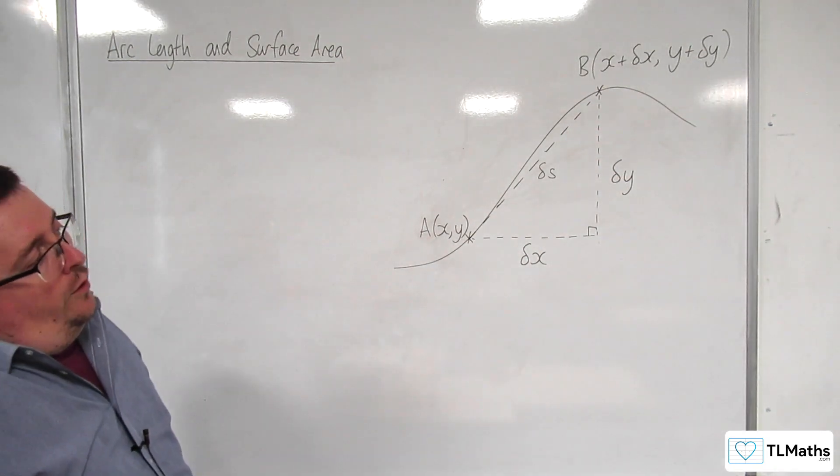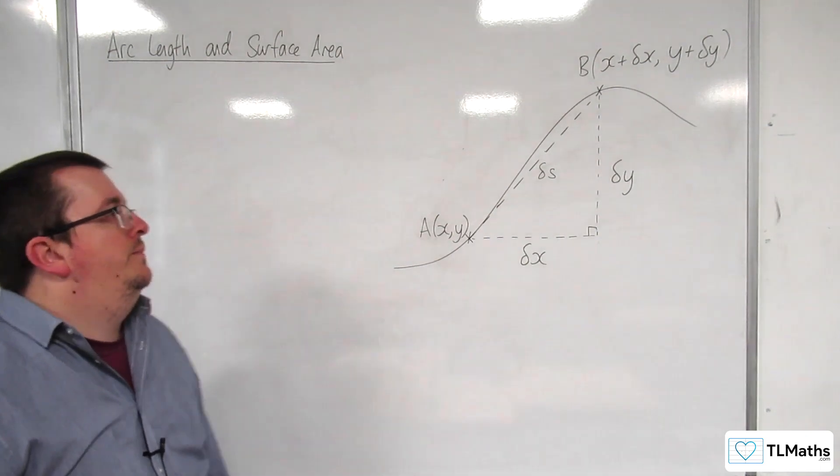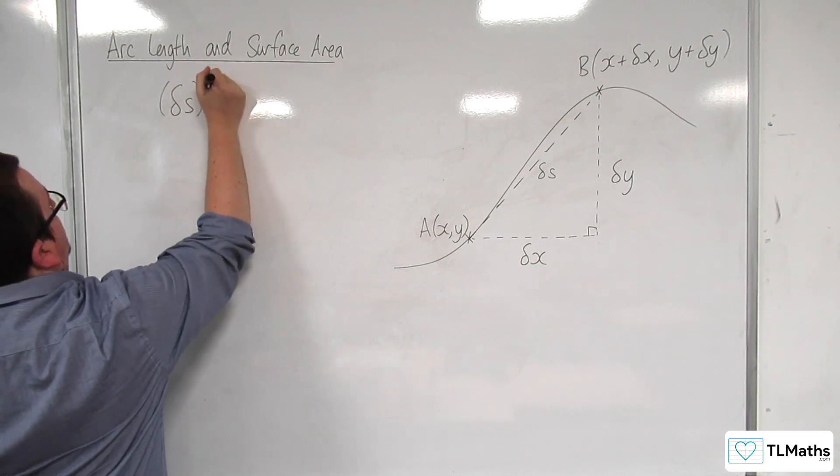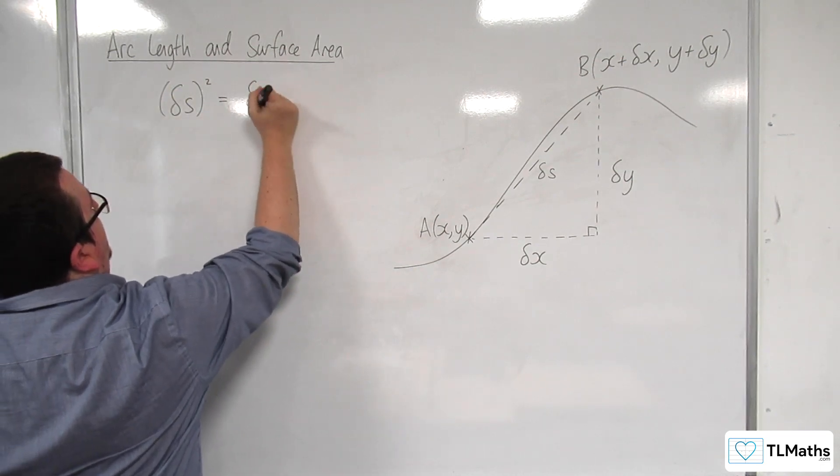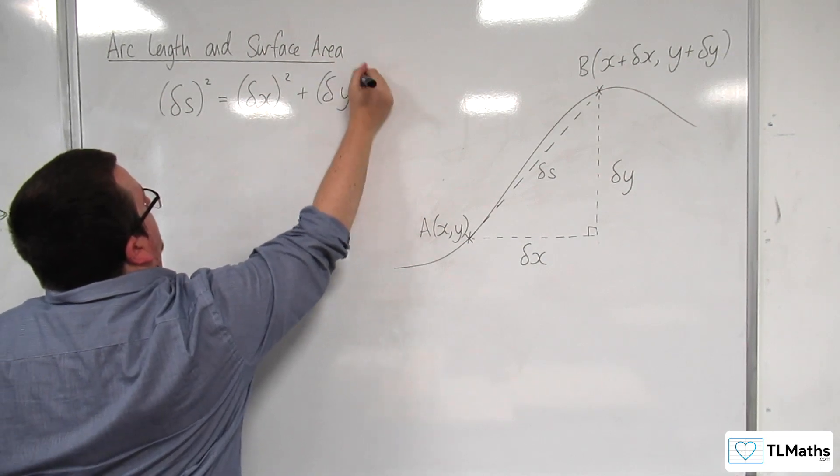So what I can then say is because it's the hypotenuse of a right angle triangle I would be able to use Pythagoras' theorem to say that delta S squared would be equal to delta x squared plus delta y squared.